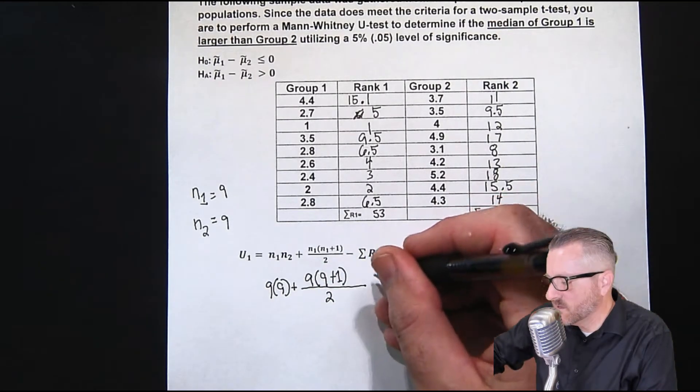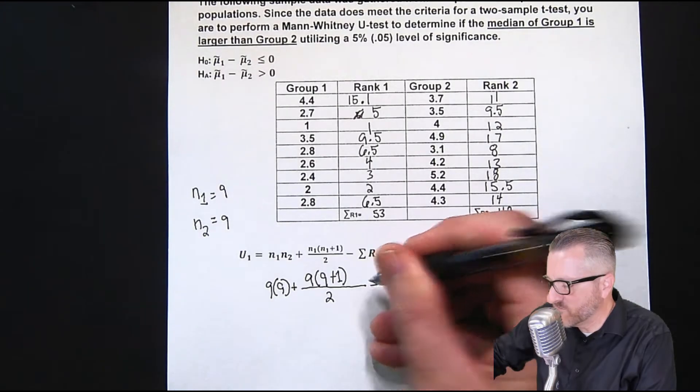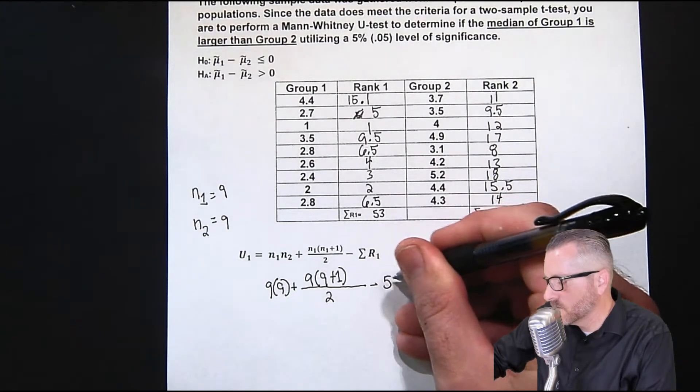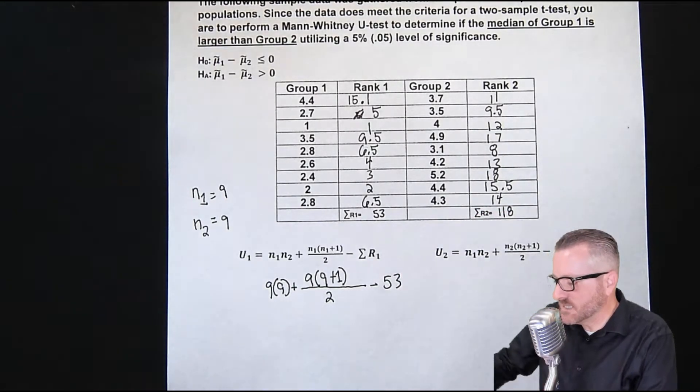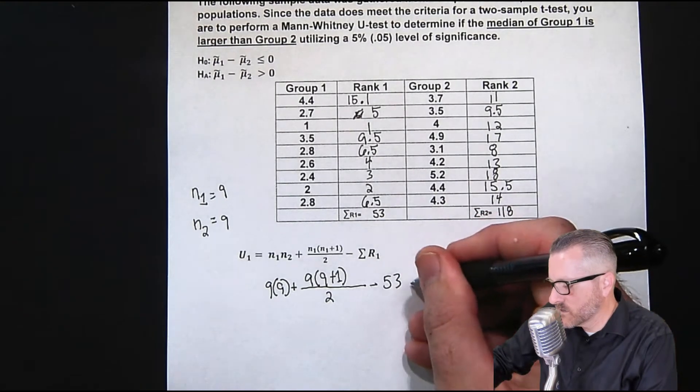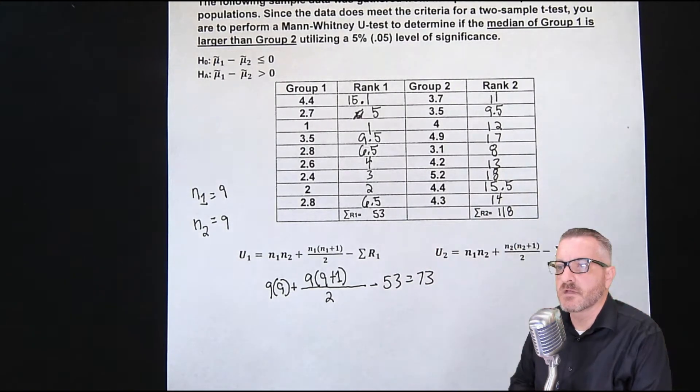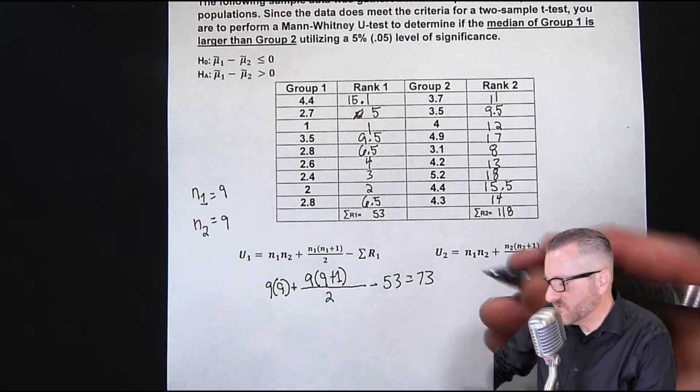And then it would be subtract the sum of R one, which is right here, 53. And the answer ends up being 73.